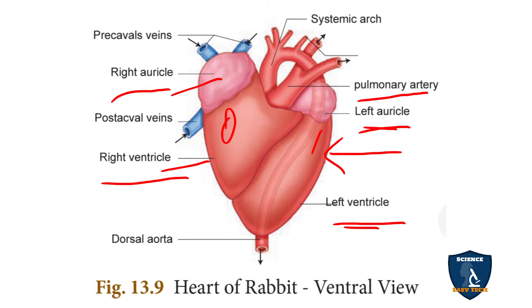This is the pulmonary artery, which carries impure blood to the lungs. And the pulmonary veins carry pure blood from the lungs to other parts of the body.